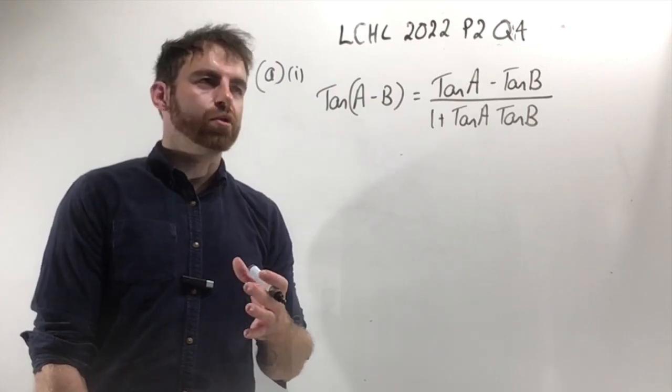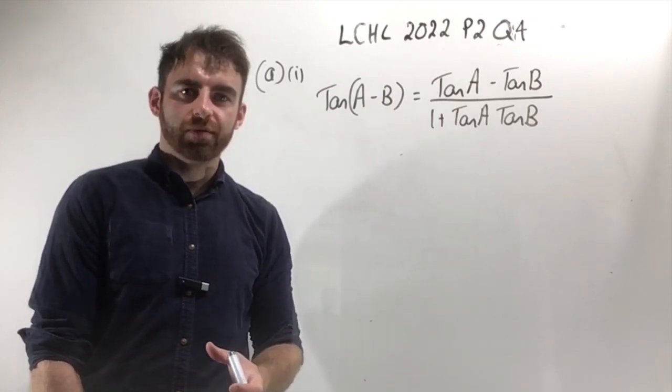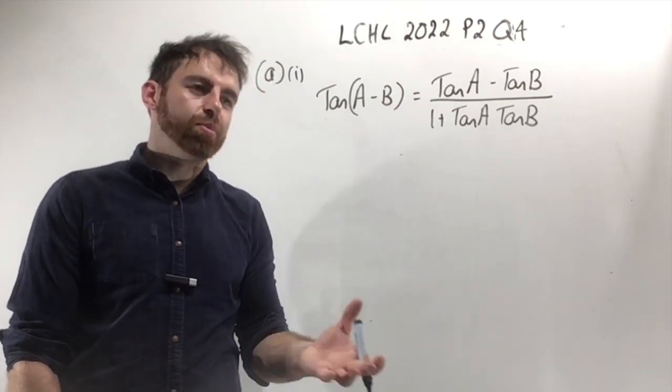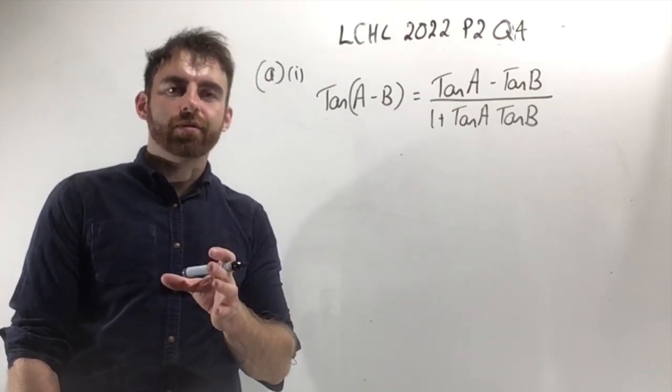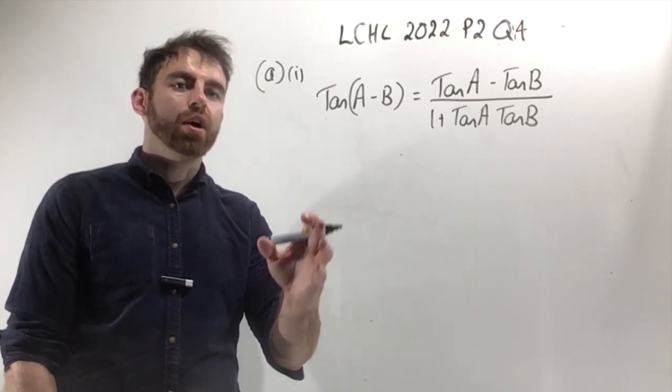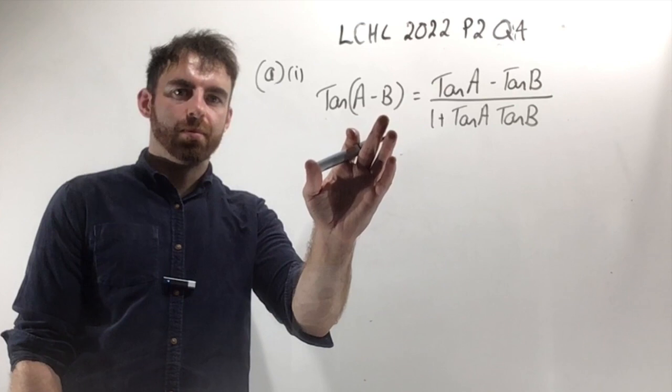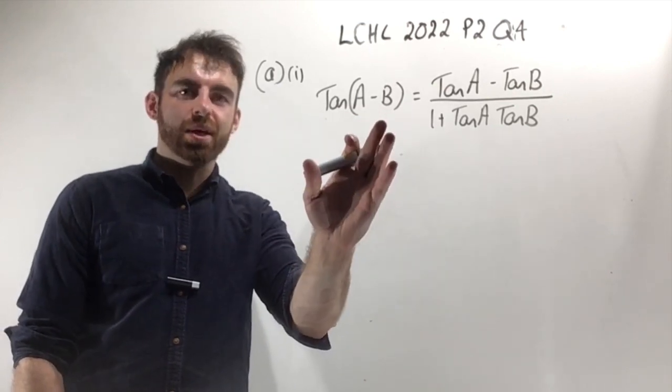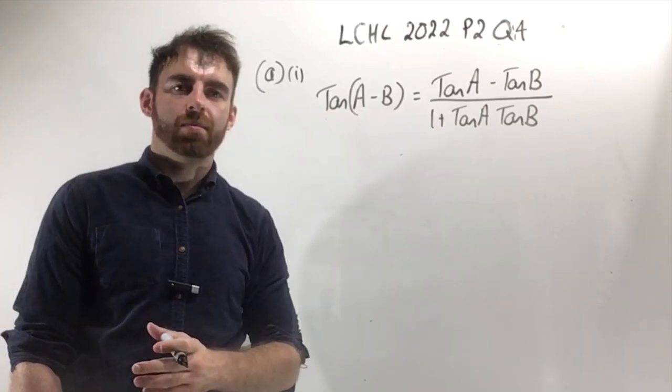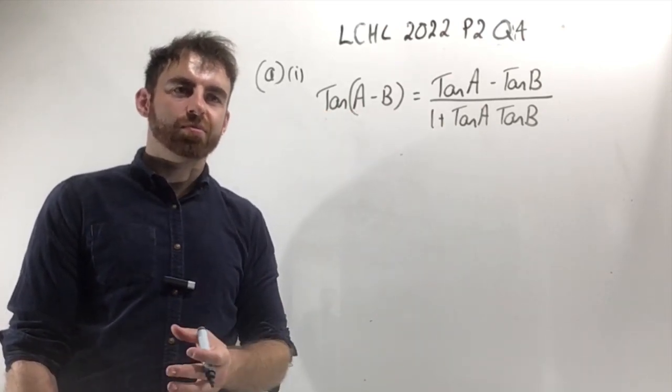In this tutorial we're discussing 2022 paper 2 question 4, and it's all about trigonometry. You probably recognize this—one of the proofs we did when studying section 4 in trigonometry was proving tan A plus B. The formula for tan A plus B is in your maths tables on page 14, and alongside it is the formula for tan A minus B.